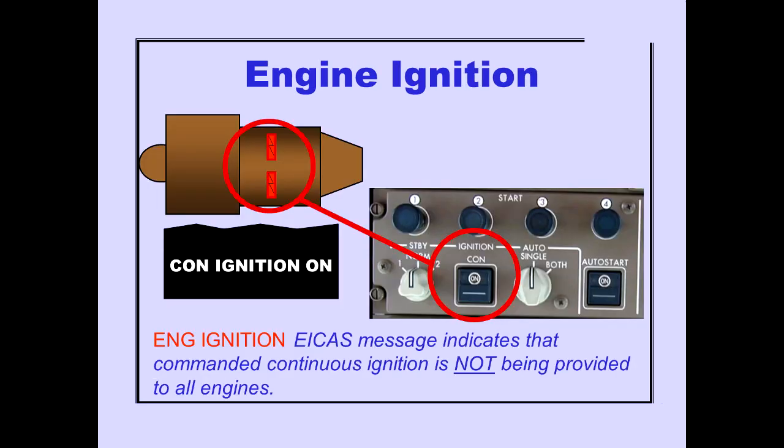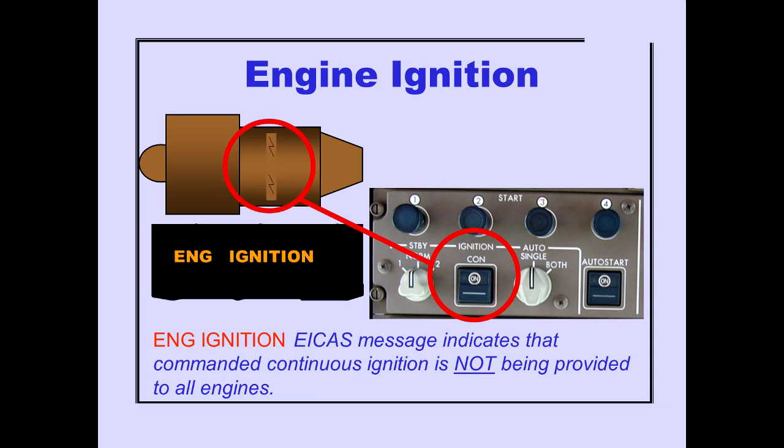The ICAS advisory message, engine ignition, is displayed if ignition is not provided to all engines when commanded by the continuous ignition switch. Display of the continuous ignition on message is inhibited.